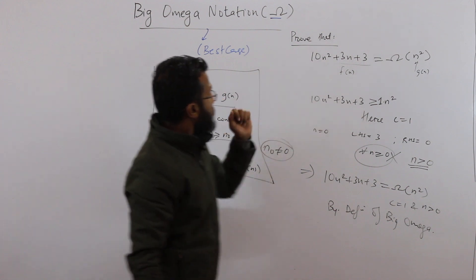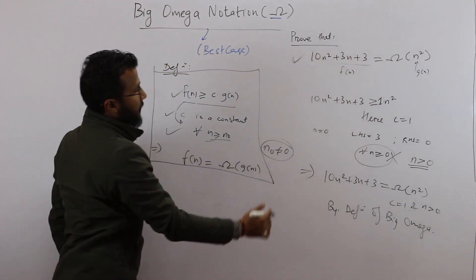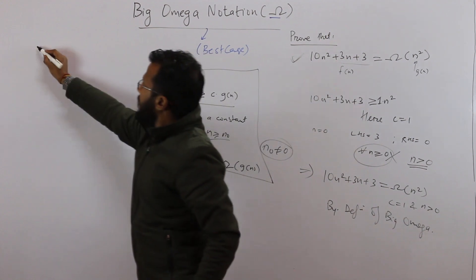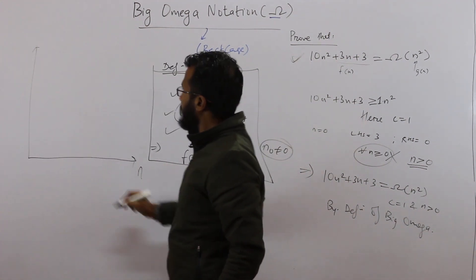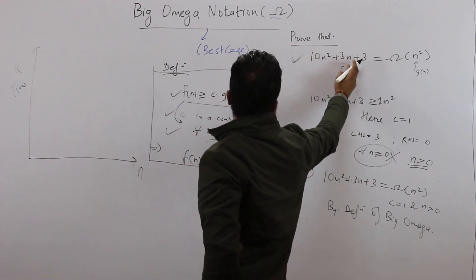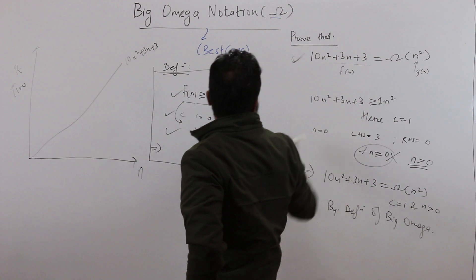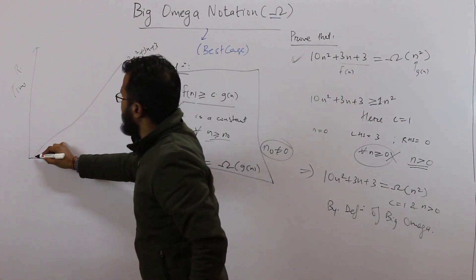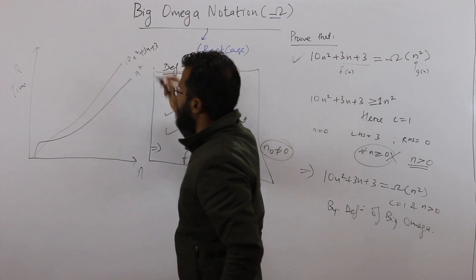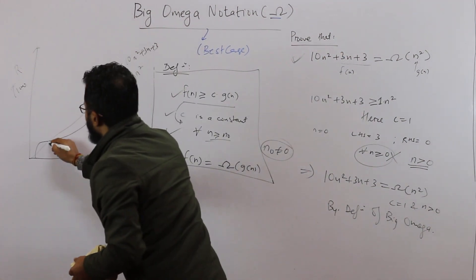We can also visualize this. Let's make a curve: the x-axis is the input, the y-axis is the running time. The function f(n) = 10n² + 3n + 3 is represented by the upper curve. I have already shown that this is lower bounded by the function n² — that is 1 times n². This is the plot, and this is the value of n naught.